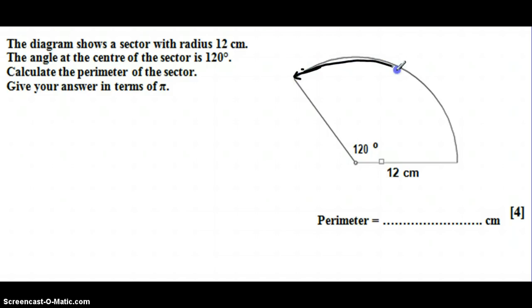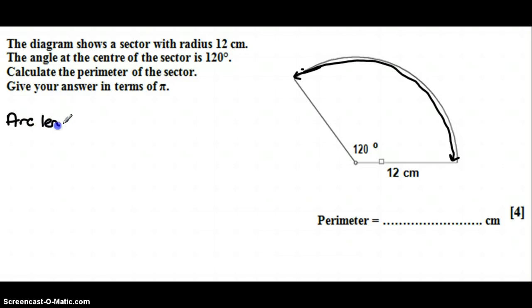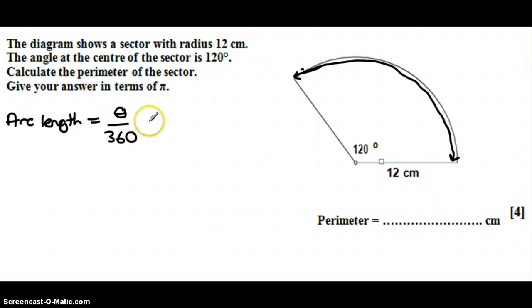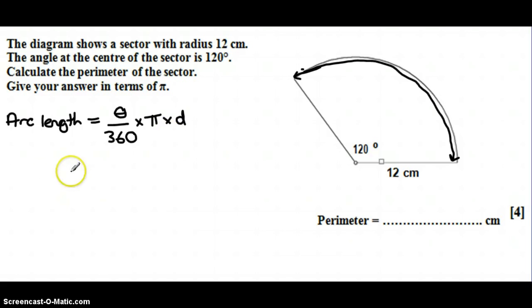To find any arc length, you take the angle of the sector divided by 360, which tells you what fraction of a whole circle you're looking at, and then you multiply that by the formula for the circumference, which is pi times diameter. So you're finding a part of the whole circumference.